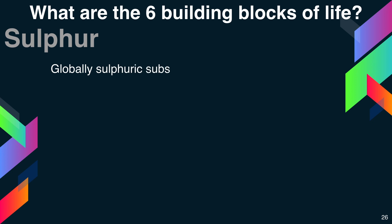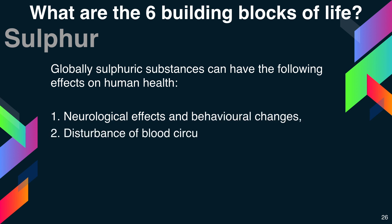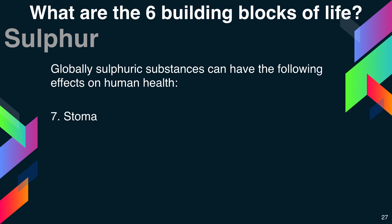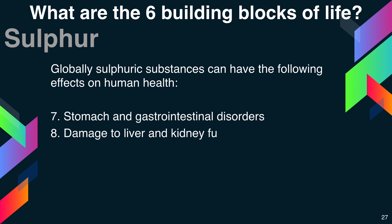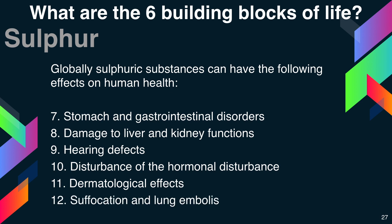Globally, sulfuric substances can have the following effects on human health: neurological effects and behavioral changes, disturbance of blood circulation, heart damage, effects on eyes and eyesight, reproductive failure, damage to immune systems, stomach and gastrointestinal disorders, damage to liver and kidney functions, hearing defects, hormonal disturbance, dermatological effects, and suffocation and lung embolism.